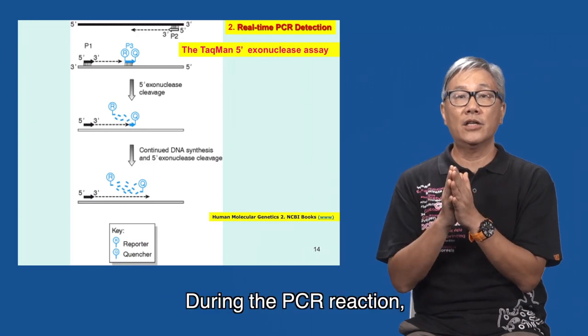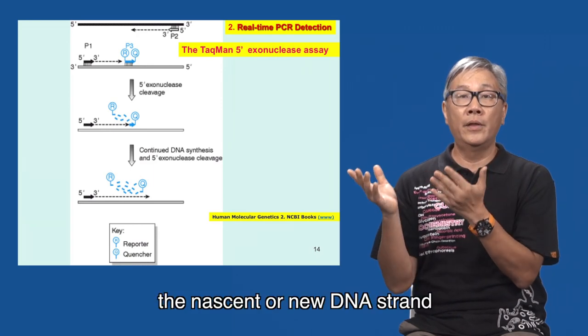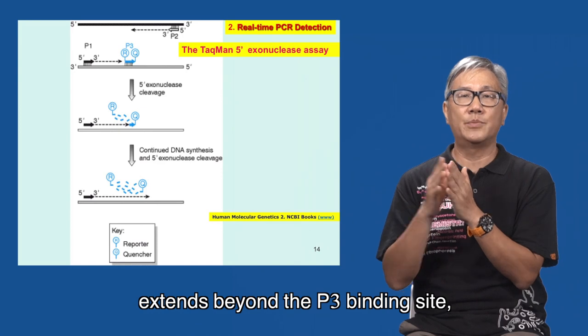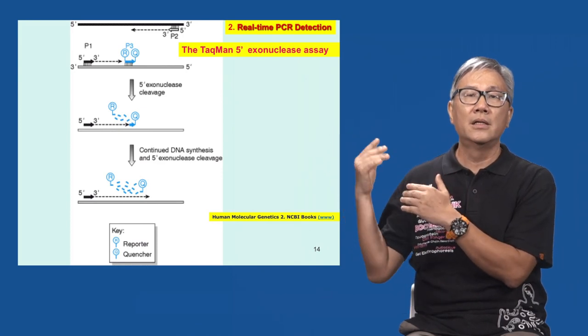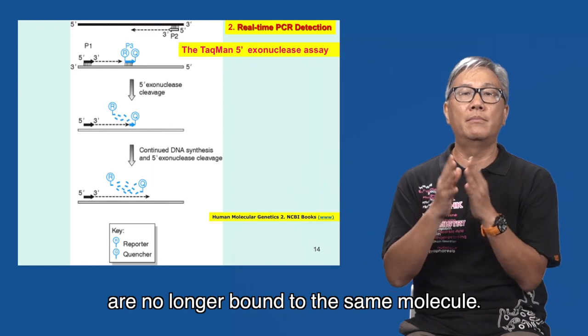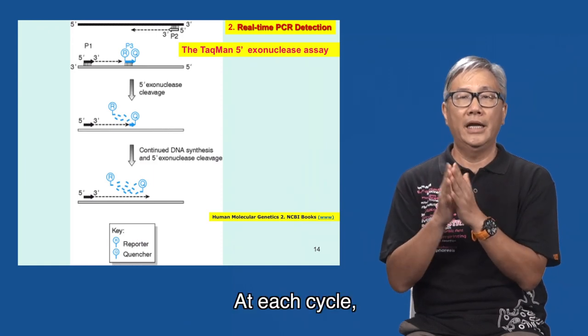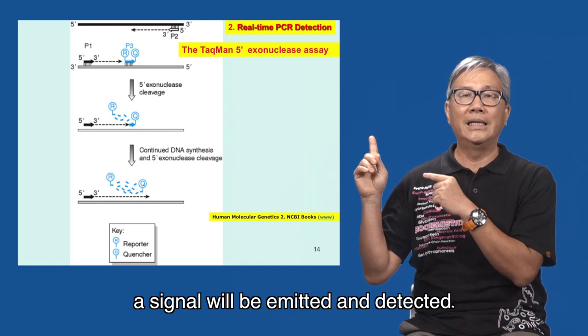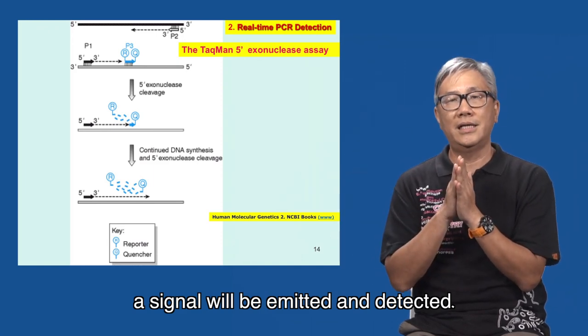During the PCR reaction, the nascent or new DNA strand extends beyond the P3 binding site, and the reporter and quencher dyes are no longer bound to the same molecule. At each cycle, a signal will be emitted and detected.